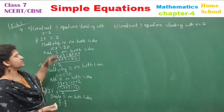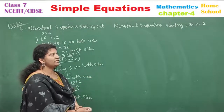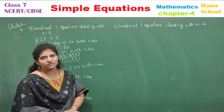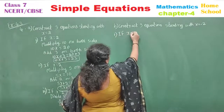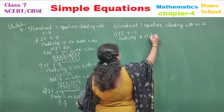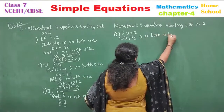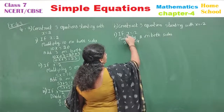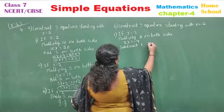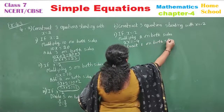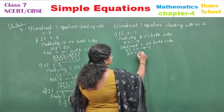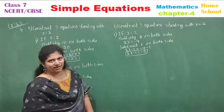Sub-question (b): Construct three equations starting with x is equal to minus 2. Same manner as before. First equation: multiply 2 on both sides — 2x equals minus 4. Then subtract 1 on both sides: 2x minus 1 equals minus 5. This is one equation.